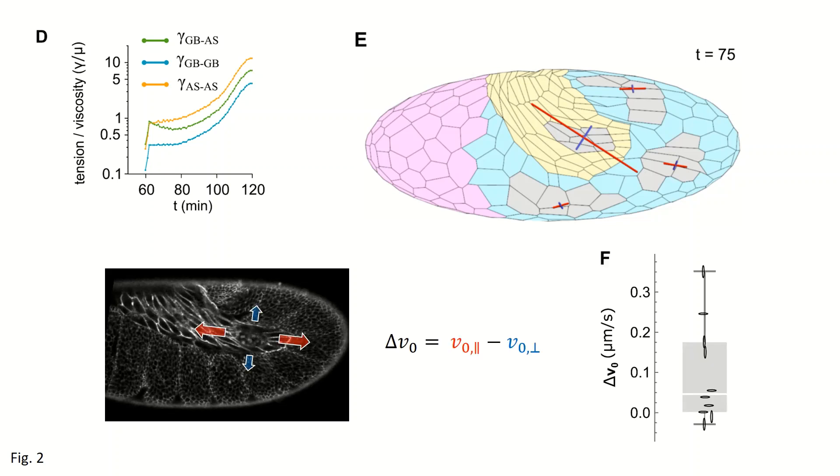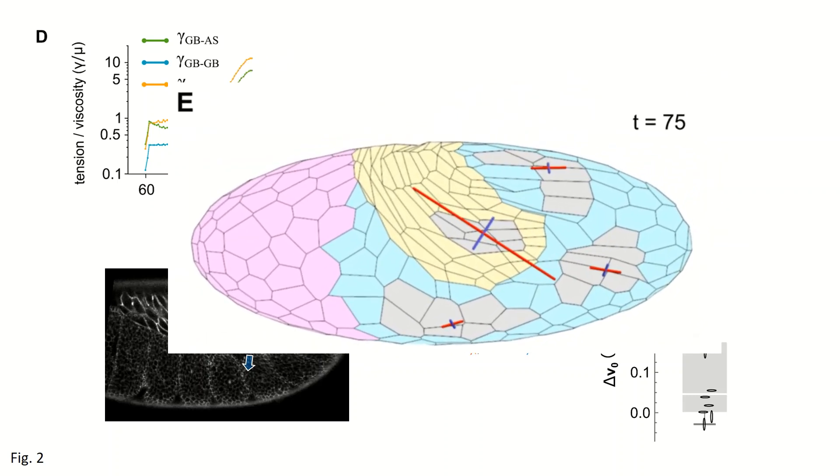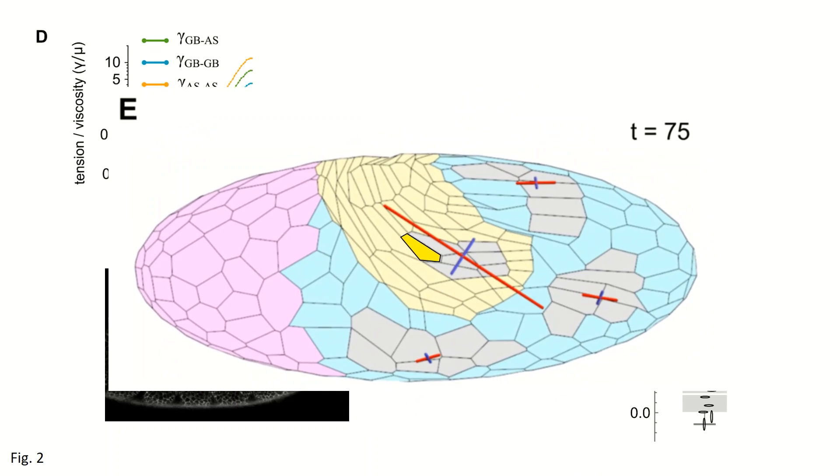With the model matched to experiments, we can now look under the hood to see how retraction really works. Although tension is uniformly applied around each cell, the cell's elongated shapes result in anisotropic tissue-level stress.